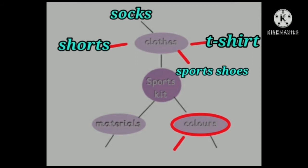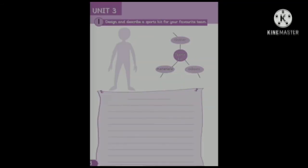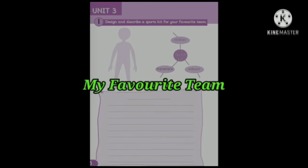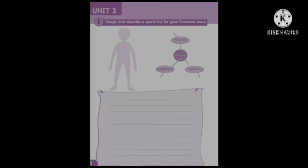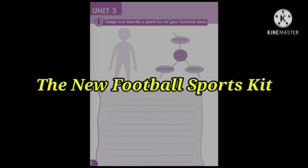What colors will the clothes be? Maybe yellow and purple? You can choose what color you want for your team. What materials do you think your team will need? Since they are playing football, they will need a ball. Now, have an overview of your chart, then go to the writing section. Look at the writing lines at the bottom of the same page. Let's suggest some titles for your writing. You can name it 'My Favorite Team', 'My New Sports Kit', or 'The New Football Sports Kit'.